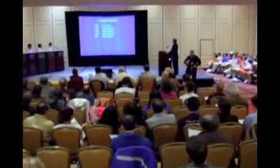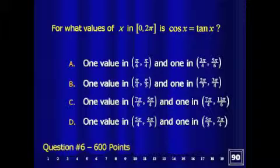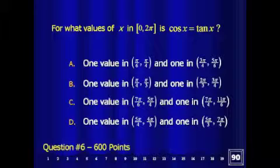Here comes question 6, for 600 points. So again, this is in radians. For what values of x in the closed interval from 0 to 2 pi — so that includes both endpoints — is cosine of x equal to tangent of x?